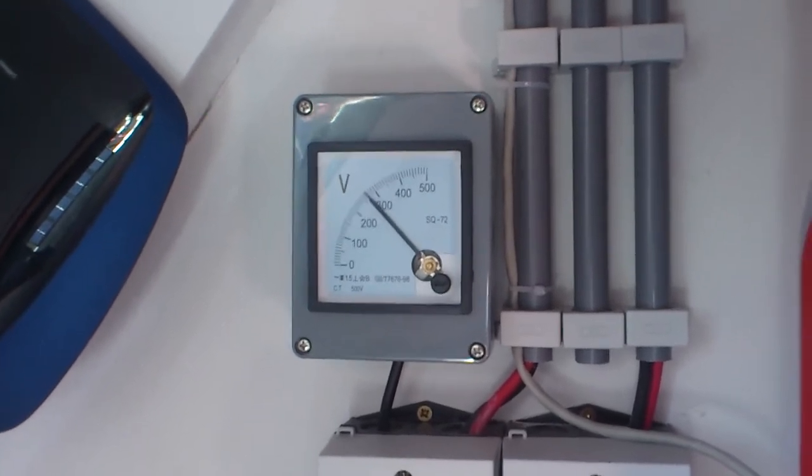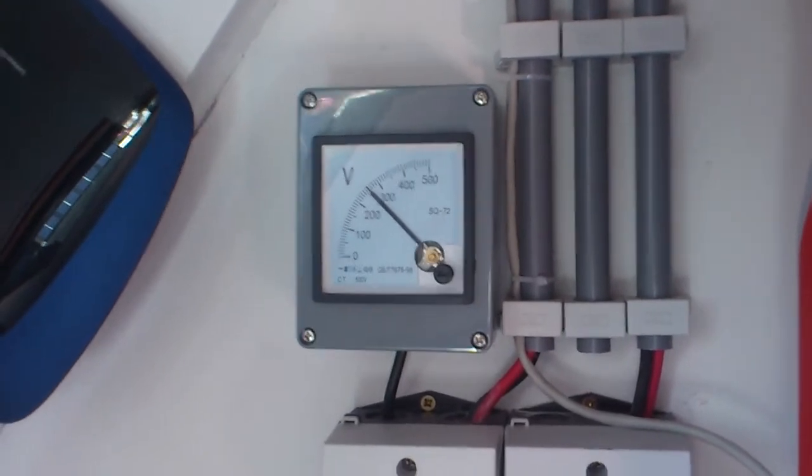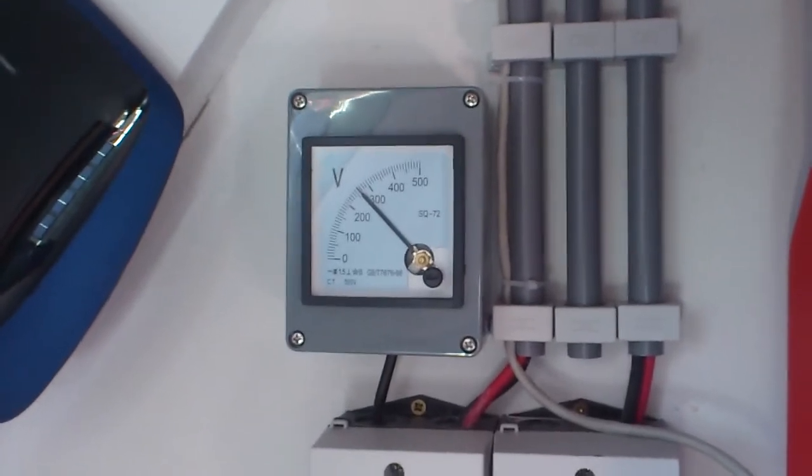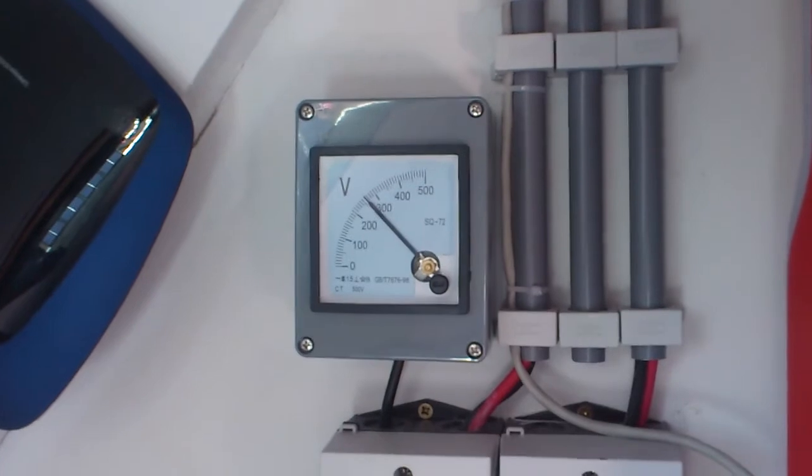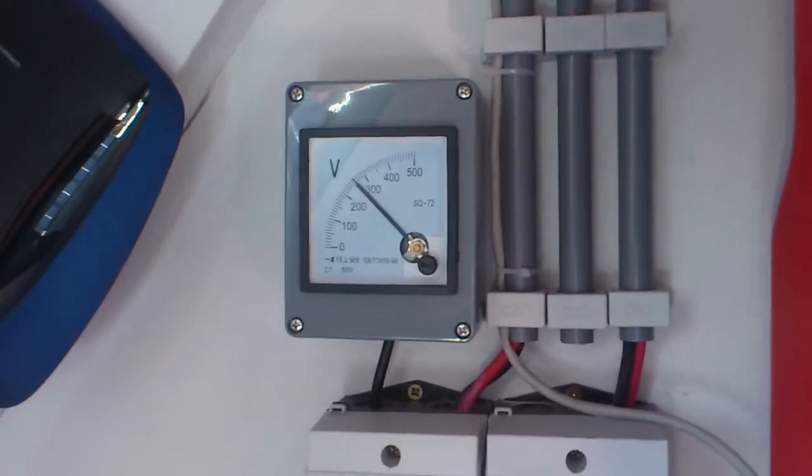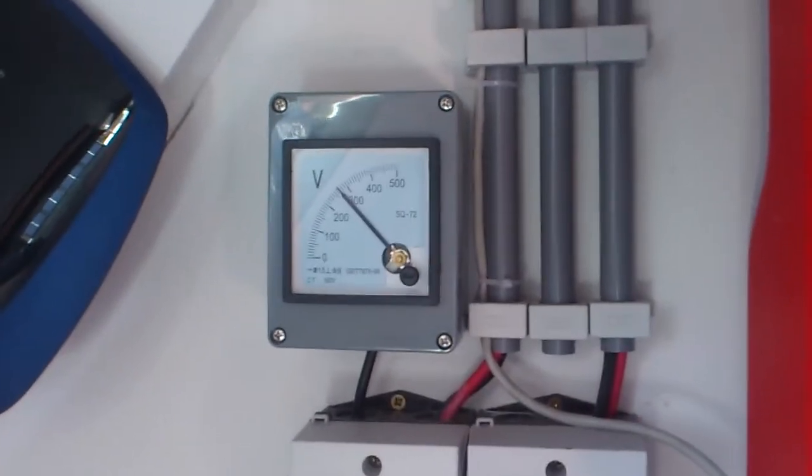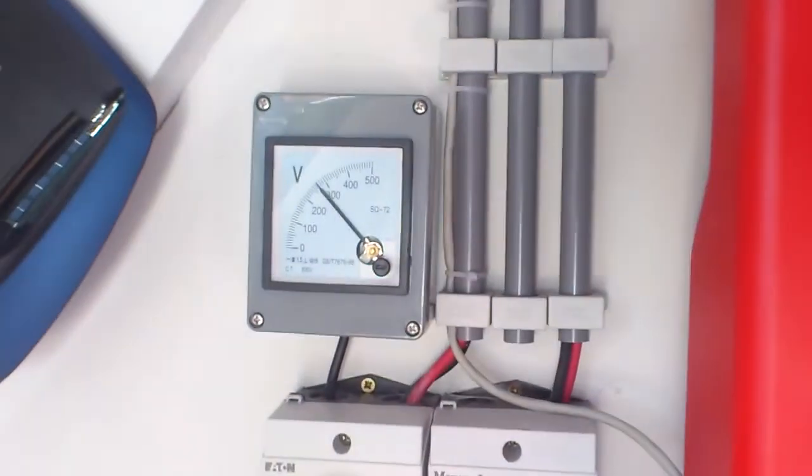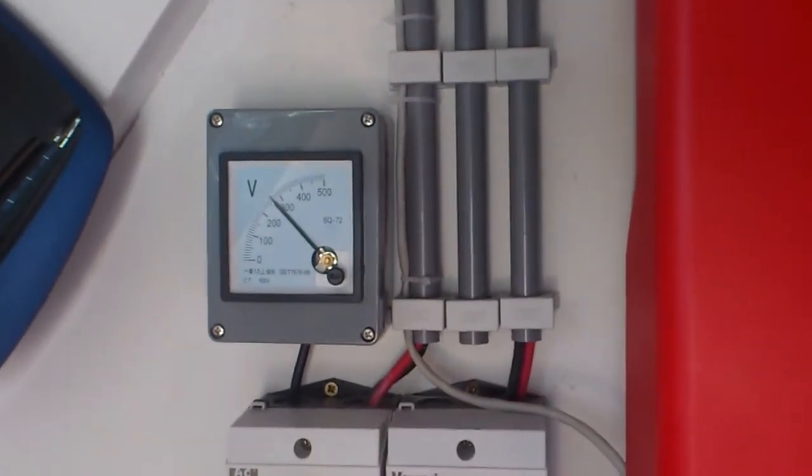There we go, that was the MPP scan, which SMA calls OptiTrack. But basically a lot of inverters do it these days. The Power One inverters do it, the Effecta is probably pretty good with it as well. Some others have the setting called a PV sweep, others call it an MPP scan, and SMA calls it OptiTrack. To each their own, I guess.